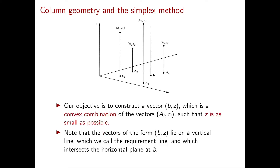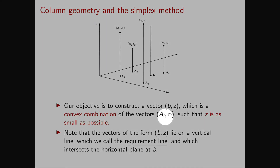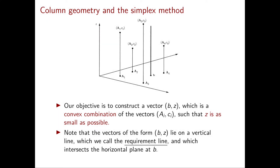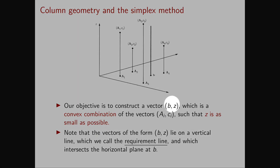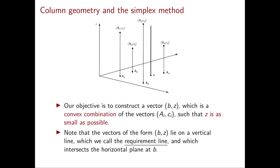In our linear programming problem, our objective is to construct a vector b,z which is a convex combination of the vectors ai,ci such that z is as small as possible. The vector b,z is visualized by considering all points of the form b,z for any z. These points lie on a vertical line called the requirement line, whose intersection with the horizontal plane is exactly the vector b.